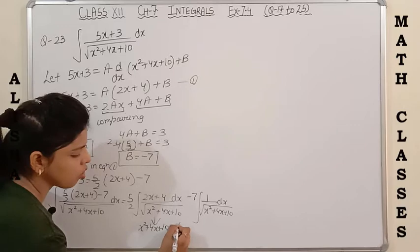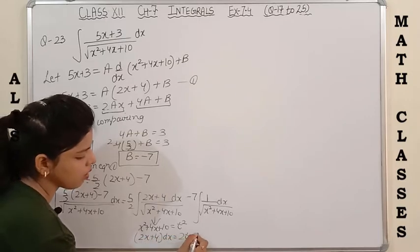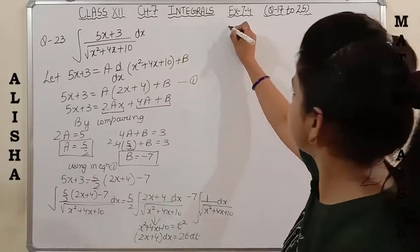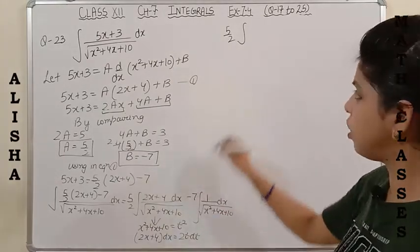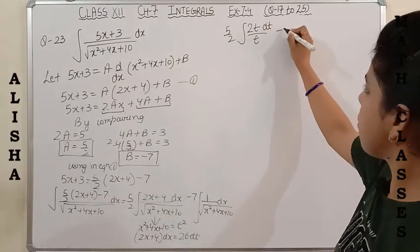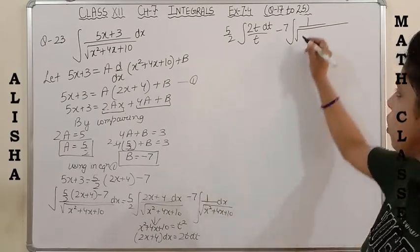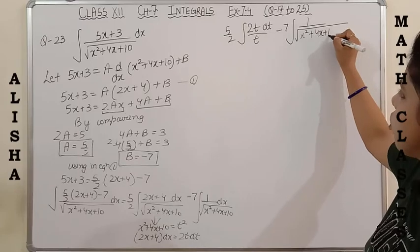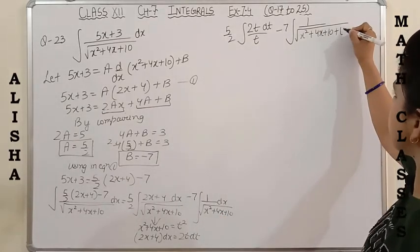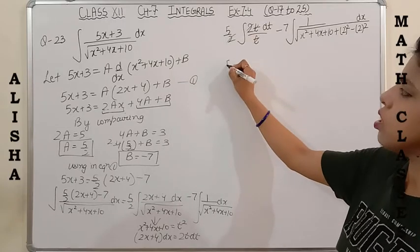Using the substitution: (5/2) times integral of 2t dt upon t equals (5/2) times 2t, and t cancels giving 5 times the integral of dt = 5t + c₁. For the second integral I apply the complete square method: coefficient of x² is 1, half the coefficient of x is half of 4 = 2, so add and subtract 2².